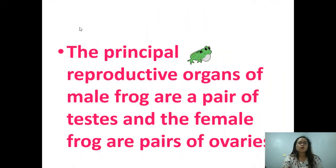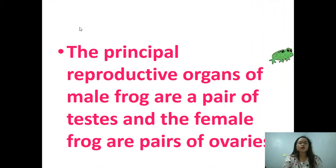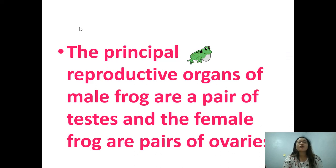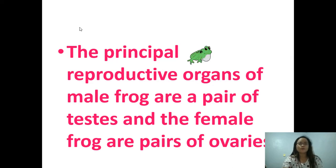The principal reproductive organs of the male frog are a pair of testes, and the female frog has pairs of ovaries. They are just like the parts of a human reproductive system.